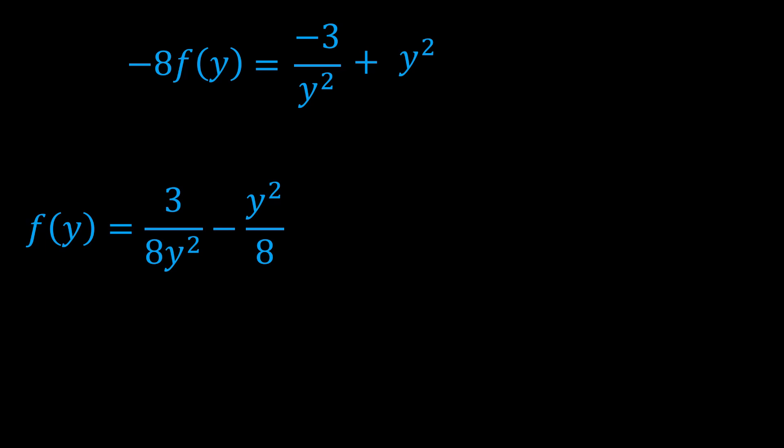f(y) can be written in more compact form by proceeding with the addition on the right-hand side to be (3 - y⁴)/(8y²).